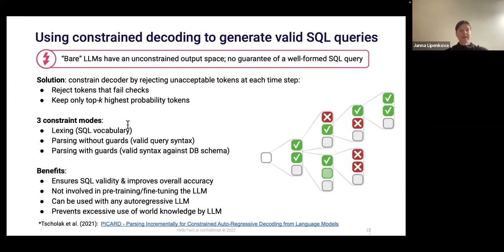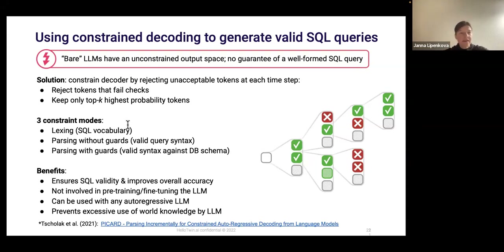The benefits of PICARD: we have a guarantee that the SQL is valid, which improves overall accuracy on our evaluation dataset. PICARD is not involved in pre-training or fine-tuning of the language model, so it can be used with any autoregressive language model — if in a few months we find a more suitable model, it can simply be replaced without changing the whole architecture. Additionally, PICARD helps prevent the model from using too much world knowledge that is not related to our specific database and the space of questions we want to cover.